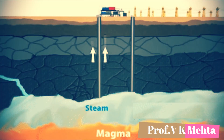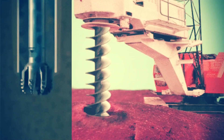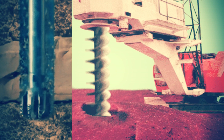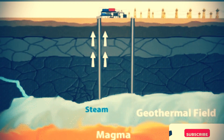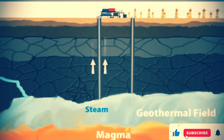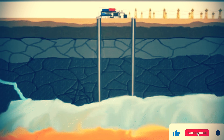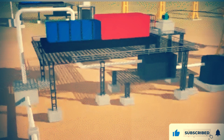In a geothermal power plant, wells are drilled one to two miles deep into the earth to pump steam or hot water to the surface. You are most likely to find one of these power plants in an area with a lot of hot springs or volcanic activity, because these are places where the earth is particularly hot just below the surface. Hot water is pumped from deep underground through a well under high pressure, and when the water reaches the surface it transfers heat from the magma, which is available at very high temperature, causing the water to be converted into steam.